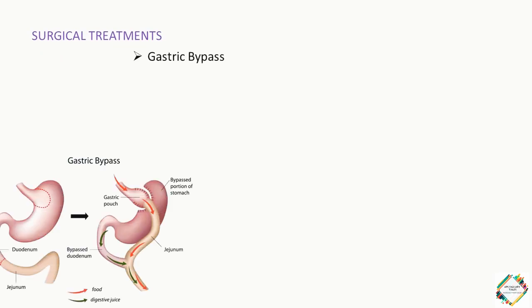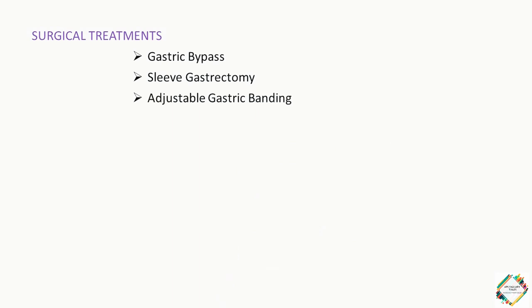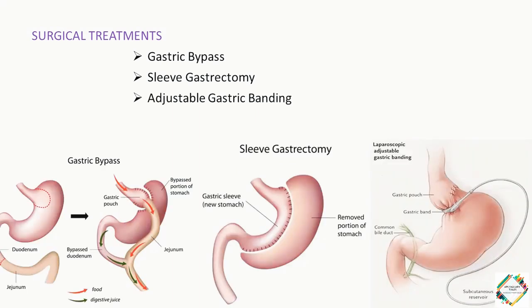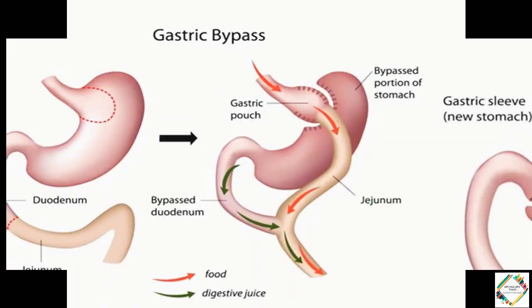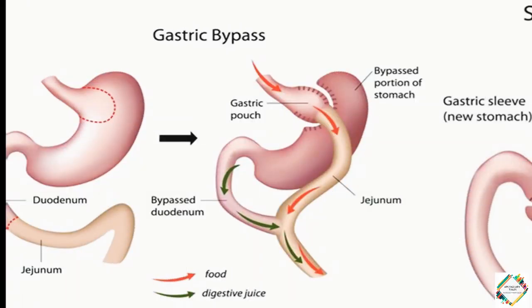Now let's discuss about the surgical treatments which include gastric bypass, sleeve gastrectomy, and adjustable gastric banding. The gastric bypass surgery is a traditional method and the most common procedure people think about when they hear the phrase bariatric surgery. During the procedure, the stomach is divided into upper and lower pouches and the small intestine is partially rerouted. This promotes weight loss by limiting the amount of calories one can consume in a single meal, as well as the number of calories that can be absorbed by the body during digestion.